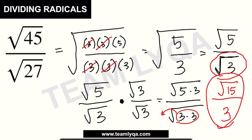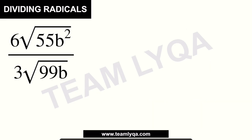Now, what if there are letters involved? If you have something like 6 times the square root of 55b squared, all over 3 times the square root of 99b, it's actually the same process. The key thing to remember is: numbers outside the radical can be divided separately from the numbers inside. So we can cancel the 6 and 3 to get 2 on top and 1 on the bottom. You cannot mix inside and outside numbers because they're under the radical.